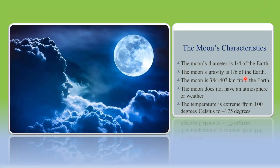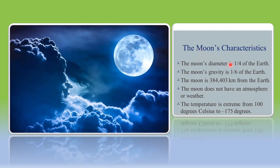The Earth has only one natural satellite, and that is the Moon. The Moon is a very small satellite when we compare it with other satellites of other planets in the solar system. Nonetheless, it plays a very important role in the movement of the Earth, and the Moon has several characteristics.